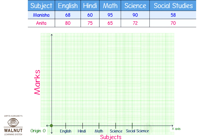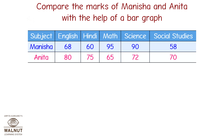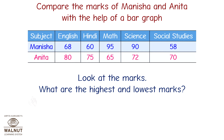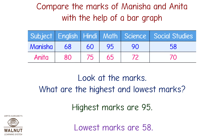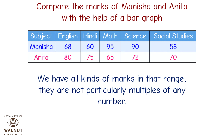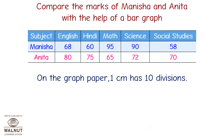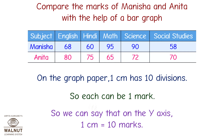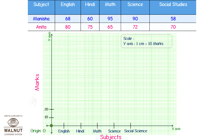Choosing the scale for the y-axis. Looking at the data, the highest marks are 95 and the lowest are 58. They are not particularly multiples of any number. On the graph paper, one centimeter has ten divisions, so each division can be one mark. So on the y-axis, one centimeter is equal to ten marks. Now we can plot all the marks using the smaller squares as a guide. So that's our scale.